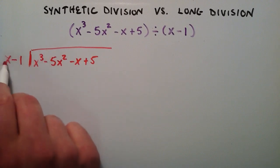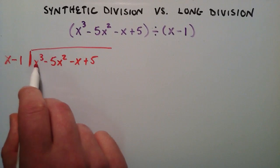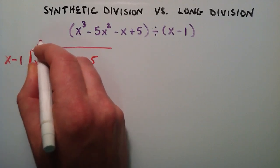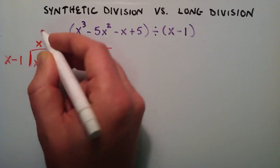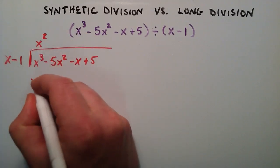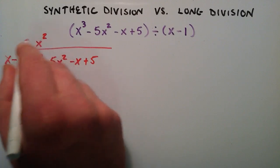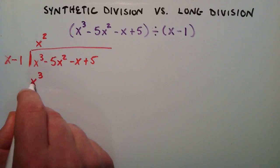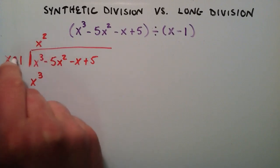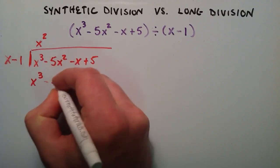We're basically asking ourselves: what do we have to multiply x by to make it equal to x to the third? And whatever that is, we write it up here. It turns out that it's x squared — x times x squared is equal to x to the third. We write that result down here. So now we've multiplied x squared by x, which gave us that result. Now we have to multiply x squared by the second term: x squared times negative one is negative x squared.